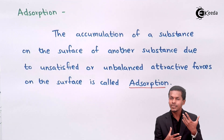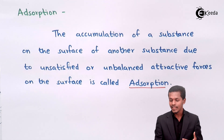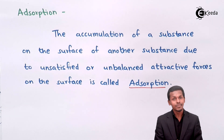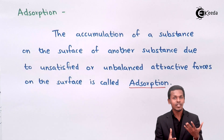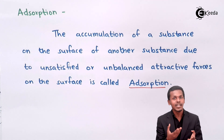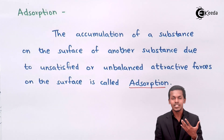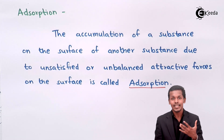To compensate for these unbalanced forces, the surface particles are more attracted towards other particles being accommodated on the surface — this phenomenon is known as adsorption. For example, with nickel (Ni) and H₂: the H₂ gas adsorbs onto the nickel particles. The surface of the nickel is balanced with the help of the attractive forces between H₂ and Ni. This is adsorption.